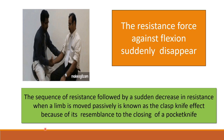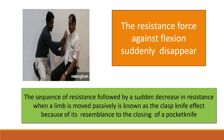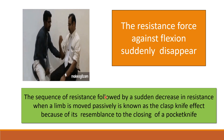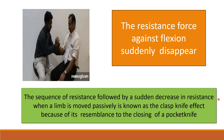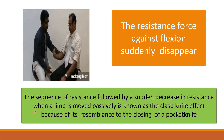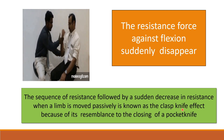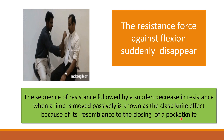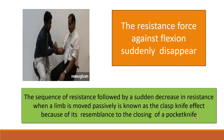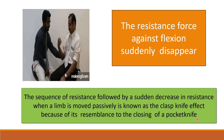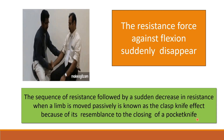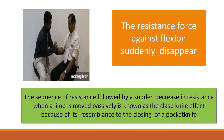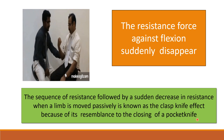This is the example of clasp knife spasticity. The sequence of resistance followed by a sudden decrease in resistance when a limb is moved passively is known as the clasp knife effect, because of its resemblance to the closing of a pocket knife. This clasp knife spasticity is seen in upper motor neuron palsy and can be explained on the concept of the inverse stretch reflex.